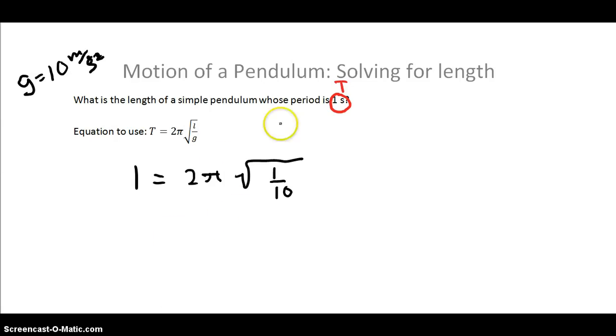Now that we've replaced those variables, what I'm going to do is begin to solve for this. Let me draw my square root a little better so it's not confusing for everybody. This whole thing is under that square root. So to begin to solve for this length here, this is an l, not a 1 by the way, what we need to do is first divide both sides by 2π.